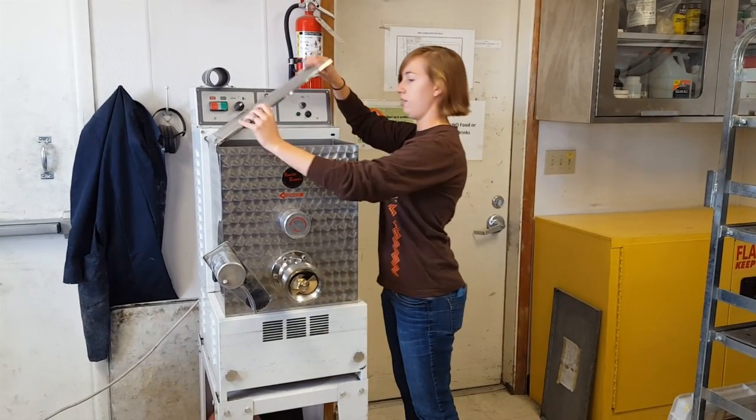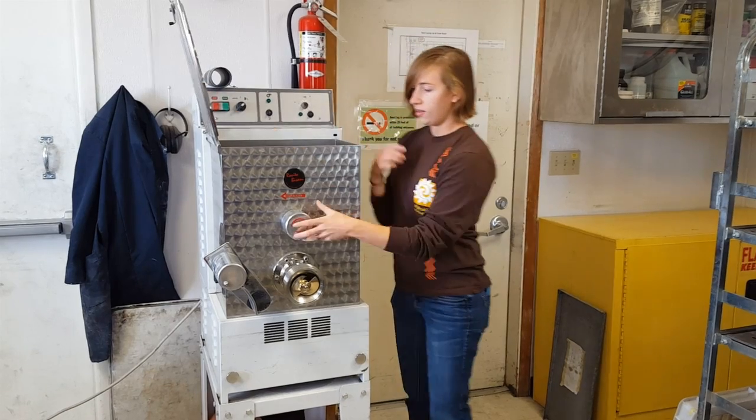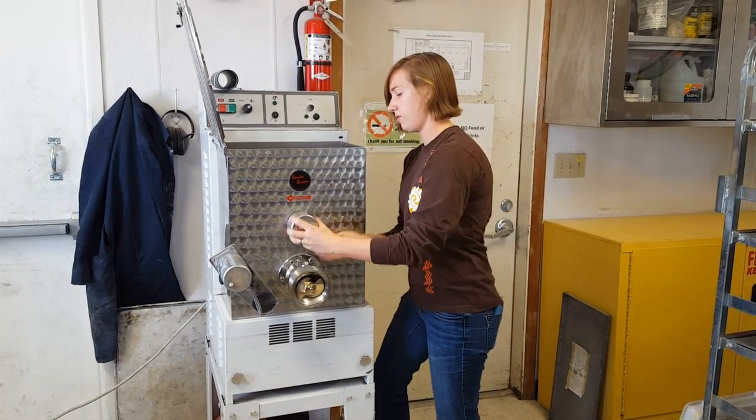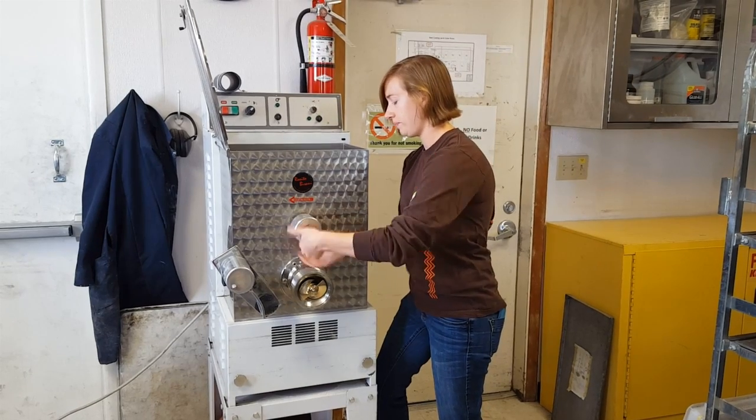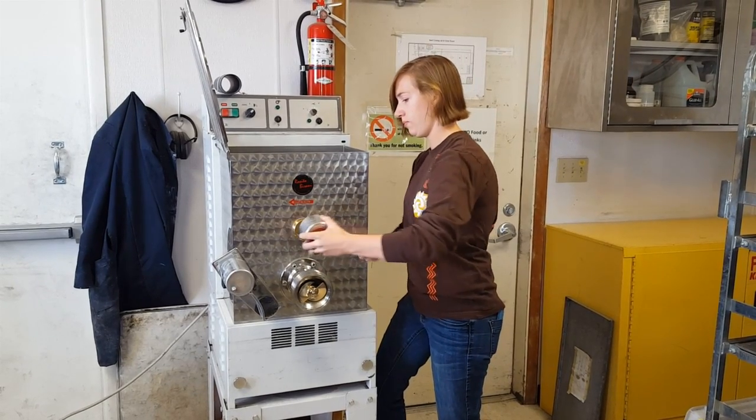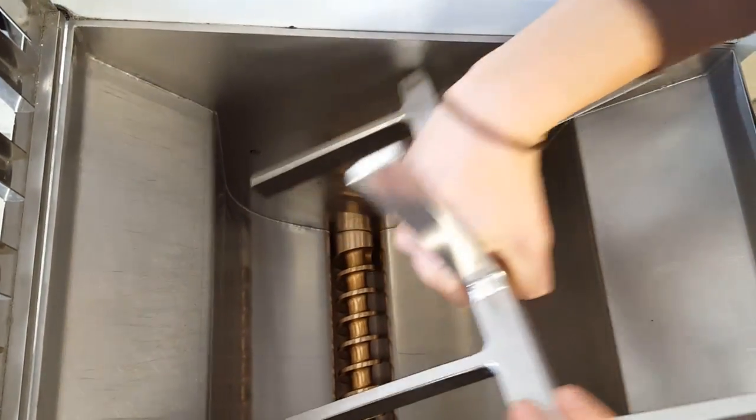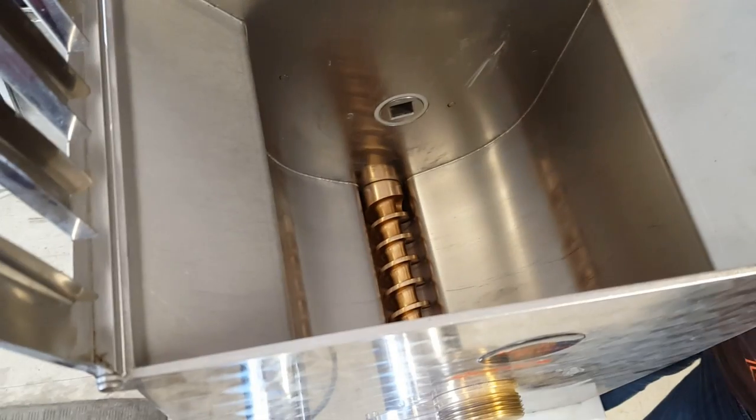Then we're going to go inside the machine. First we will unscrew this piece here, also to the left. Carefully take this piece out. If it doesn't come out easily, just twist it and pull it up and out.